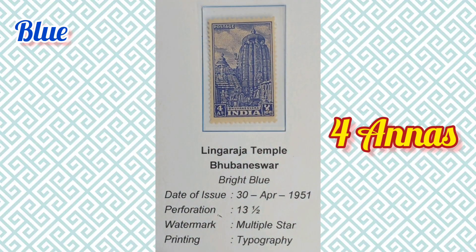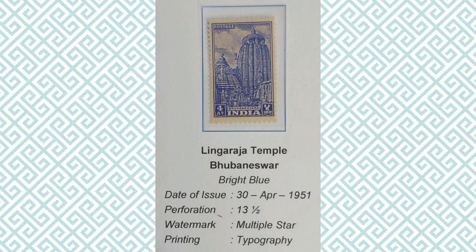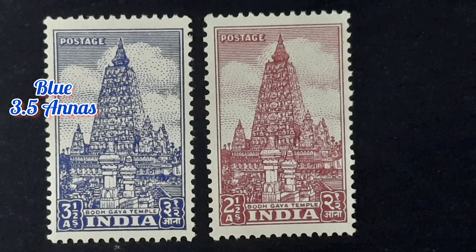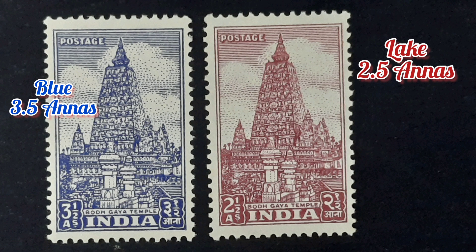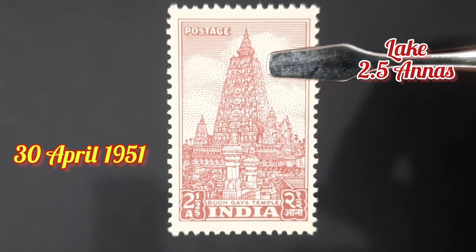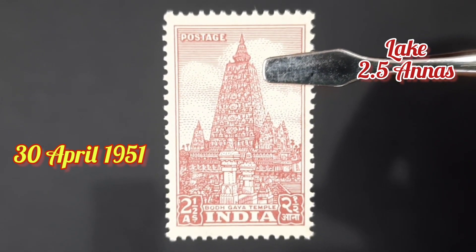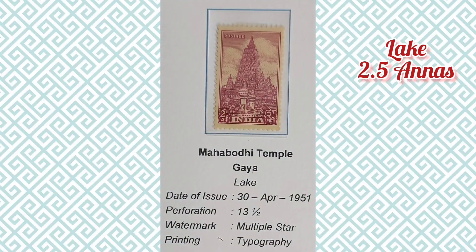Since the surface rate changed from three and a half to four annas, the three and a half anna Bodh Gaya Temple stamp also had its color changed from blue to lake, and its value was changed to two and a half annas. This new stamp was issued from 30th April 1951. Philatelic information of this stamp is provided here.